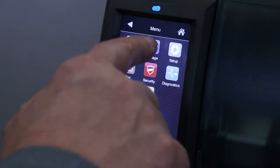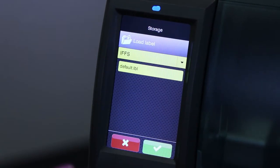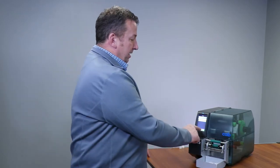So I go into the printer, go into settings, go into storage, go into load label, and I've loaded label format in there and I get checked.